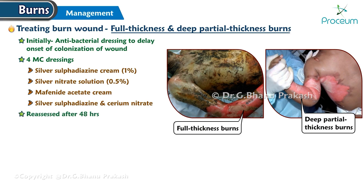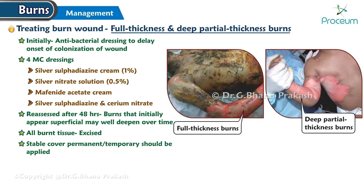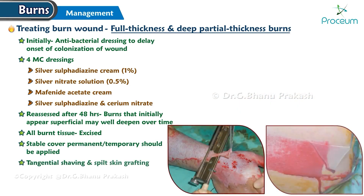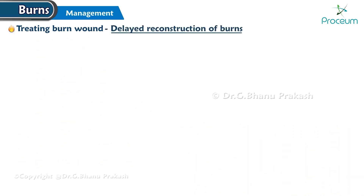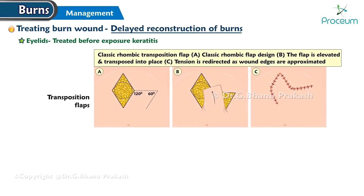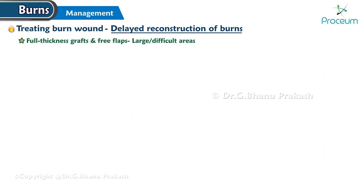Wounds should be reassessed after 48 hours, because burns that initially appear superficial may well deepen over time. All burnt tissue needs to be excised. Stable cover, permanent or temporary, should be applied. Tangential shaving and split skin grafting must be done. If there is delayed reconstruction of burns, eyelids must be treated before exposure keratitis develops. Transposition flaps and z-plasties with or without tissue expansion are useful. Full thickness grafts and free flaps may be needed for large or difficult areas.